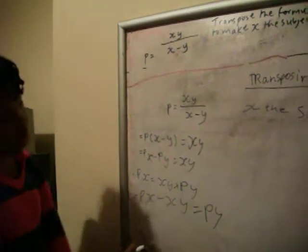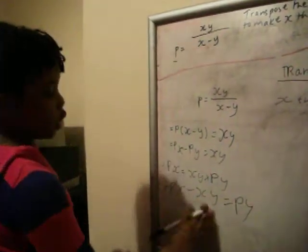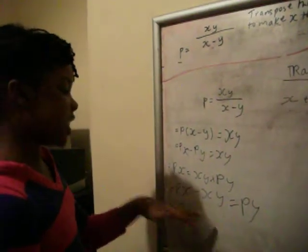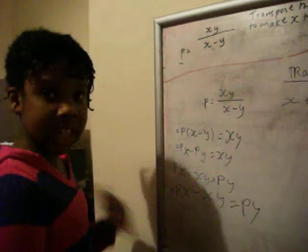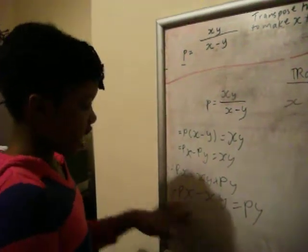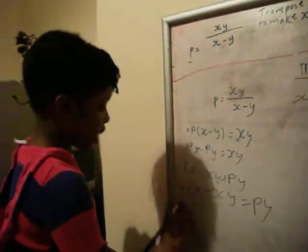And then after that, normally when we're doing transposing the formula, if you have two of the same thing that you want to get the subject, what you basically do is just factor it. Let's just put that back in the bracket.